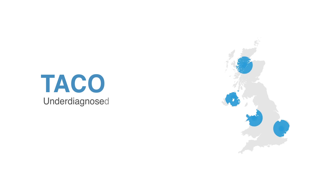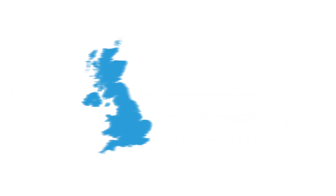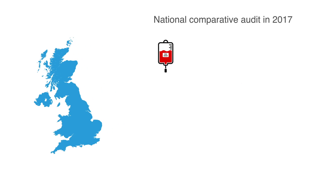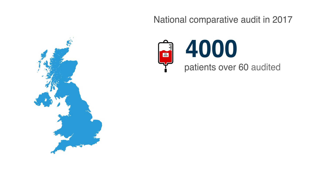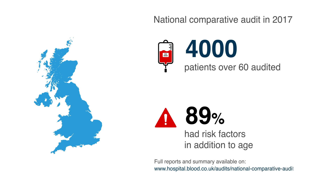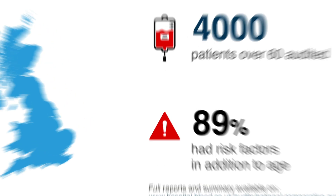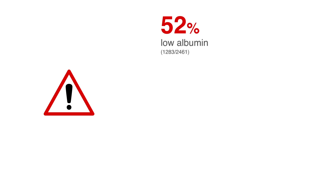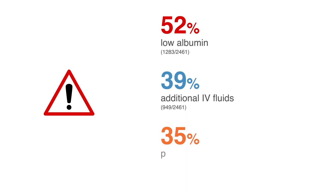TACO is underdiagnosed. In 2017, a national audit of TACO in more than 4,000 transfused patients over 60 years of age showed that 89% had risk factors in addition to their age. The three most common additional risk factors were low albumin, additional IV fluids, and positive fluid balance.